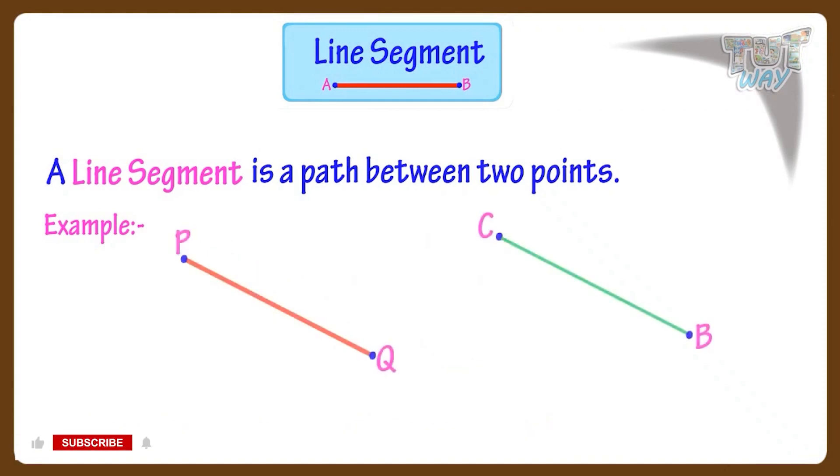Here are some more examples of line segments. This line segment will be written as PQ or QP with a bar above the name. That denotes that it's a line segment.